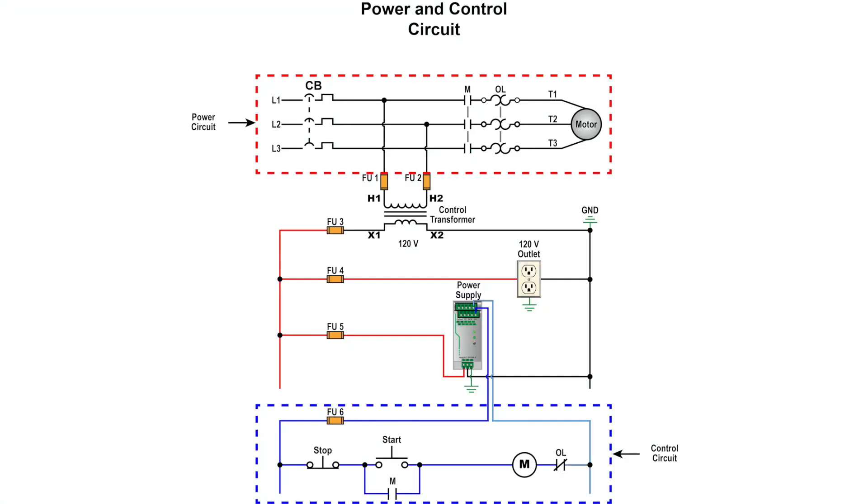There are two circuits associated with the operation of the contactor: the control circuit and the power circuit. The control circuit is connected to the coil, and the power circuit is connected to the main power contacts.